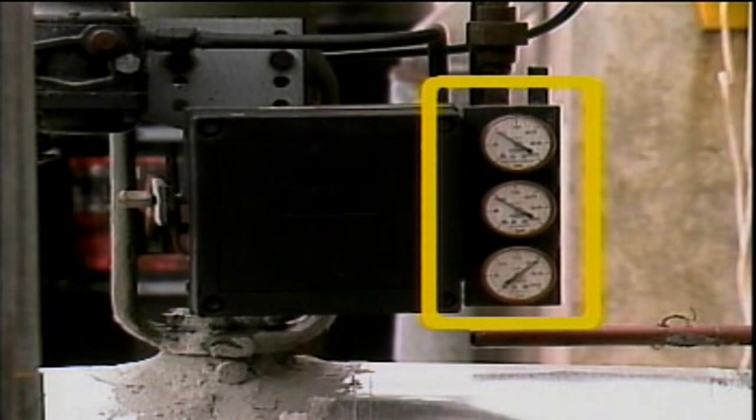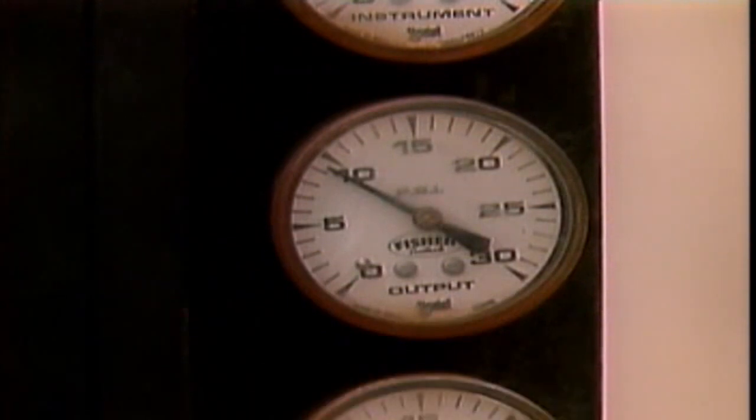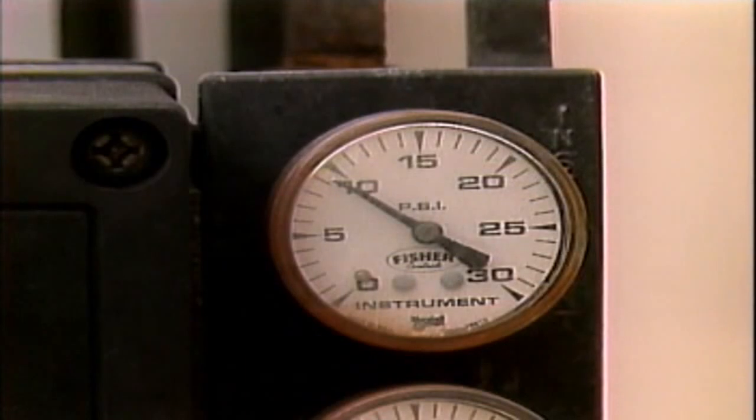The positioner shown here has three gauges. One gauge indicates the supply air pressure to the positioner, and another indicates the output air pressure to the actuator. The third gauge indicates the input signal pressure from the controller.